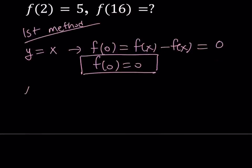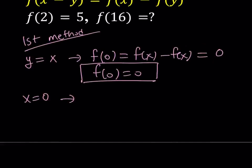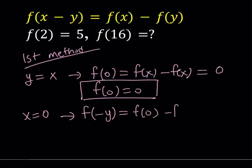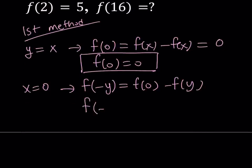We're going to look for more values. How about replacing x with 0 but doing nothing for y? If you replace x with 0, you're going to get f of negative y. On the right-hand side, you're going to get f of 0 minus f of y. Notice that we do know from the previous step that f of 0 is equal to 0. So this gives us f of negative y equals negative f of y. This is an important result and is true for all real values of y. This means that f is an odd function.